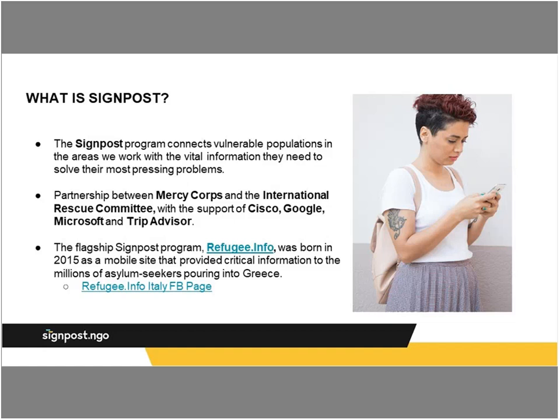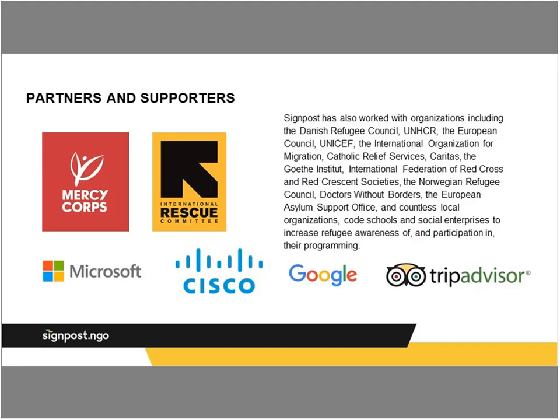We started in refugee info in Greece and are now expanded into six European countries, and we're also working in Jordan and El Salvador. At the global level, Mercy Corps and the IRC are on a global leadership council — we make all strategic decisions together and manage programs together. On the ground, each organization leads a particular instance. In Europe, where we're Refugee.info, IRC is the lead and drives the content strategy. In Jordan, Mercy Corps is the lead, deciding strategy and content coverage.